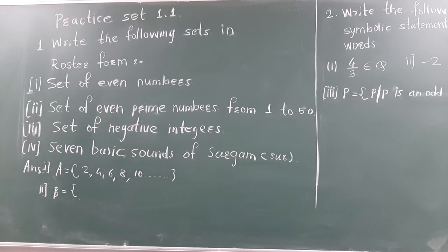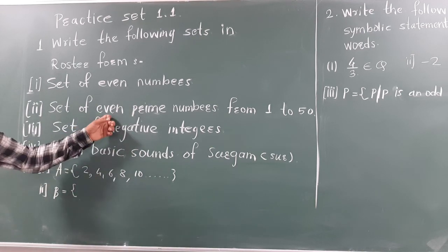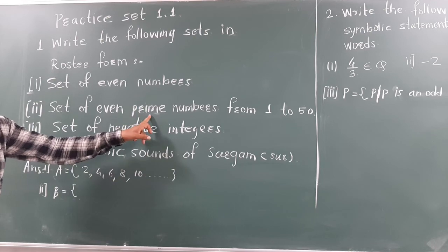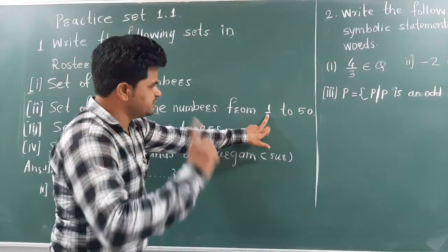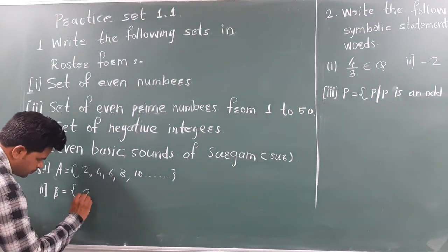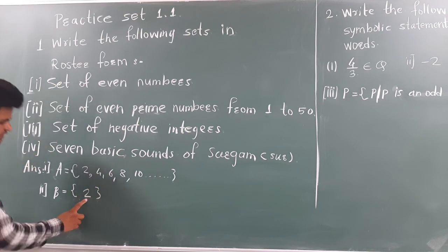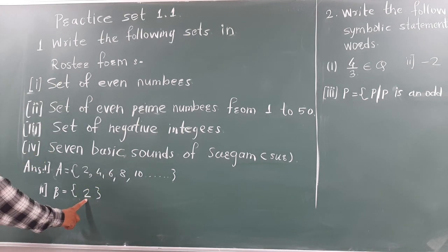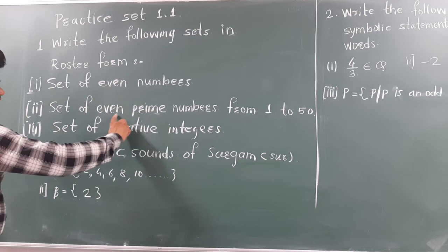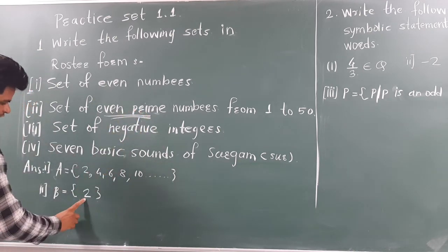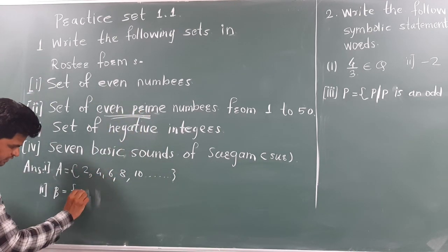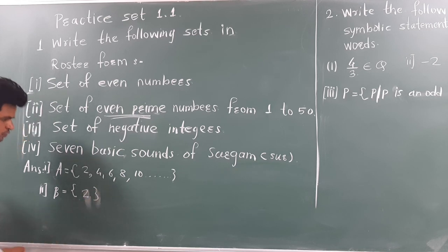Set of even prime number. We know the even as well as prime numbers in 1 to 50, there is only one digit, that is 2. Instead of 2, there is no any one number, that is even and prime. The set is finished here, containing only digit 2. This is answer of second.